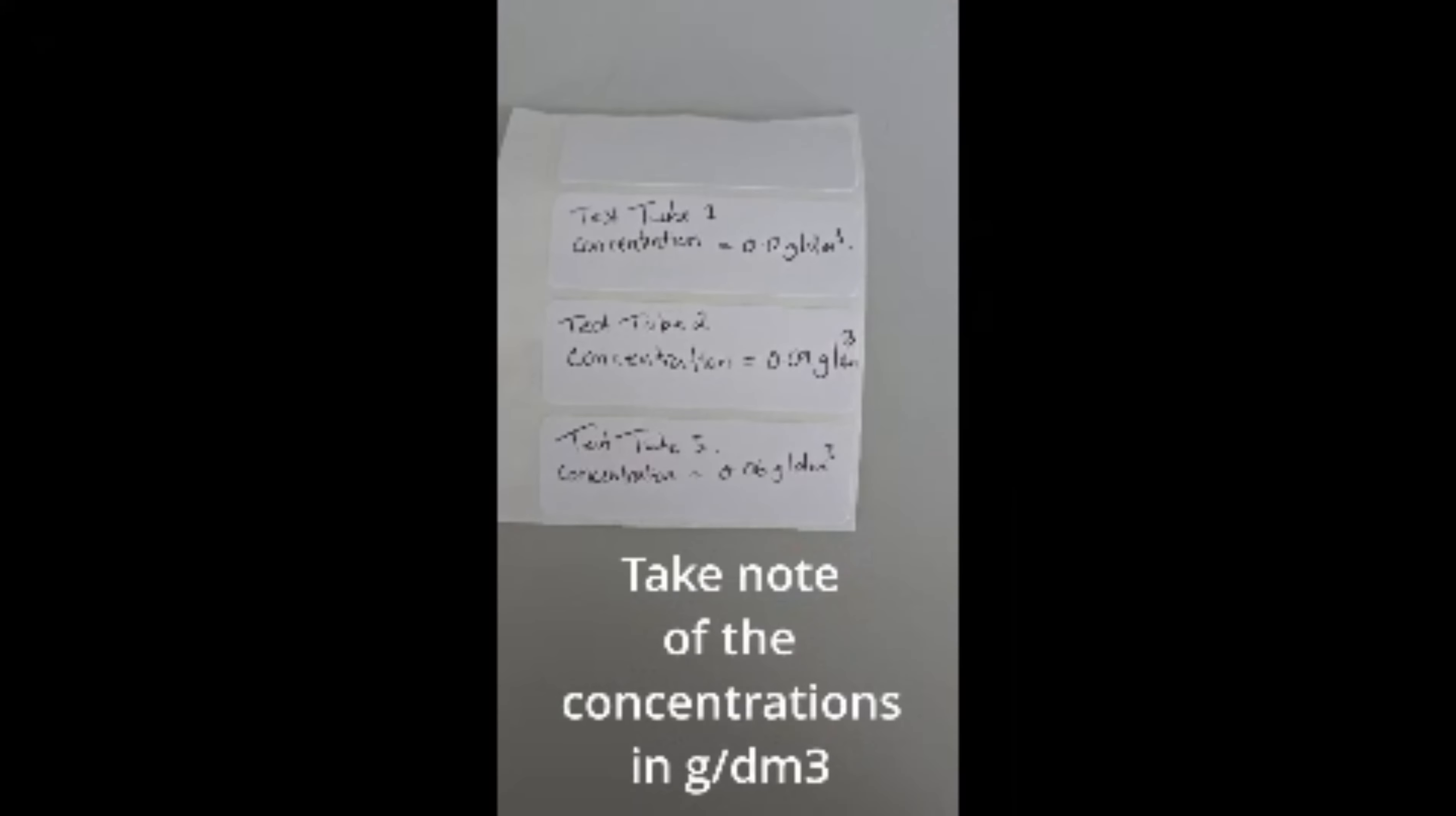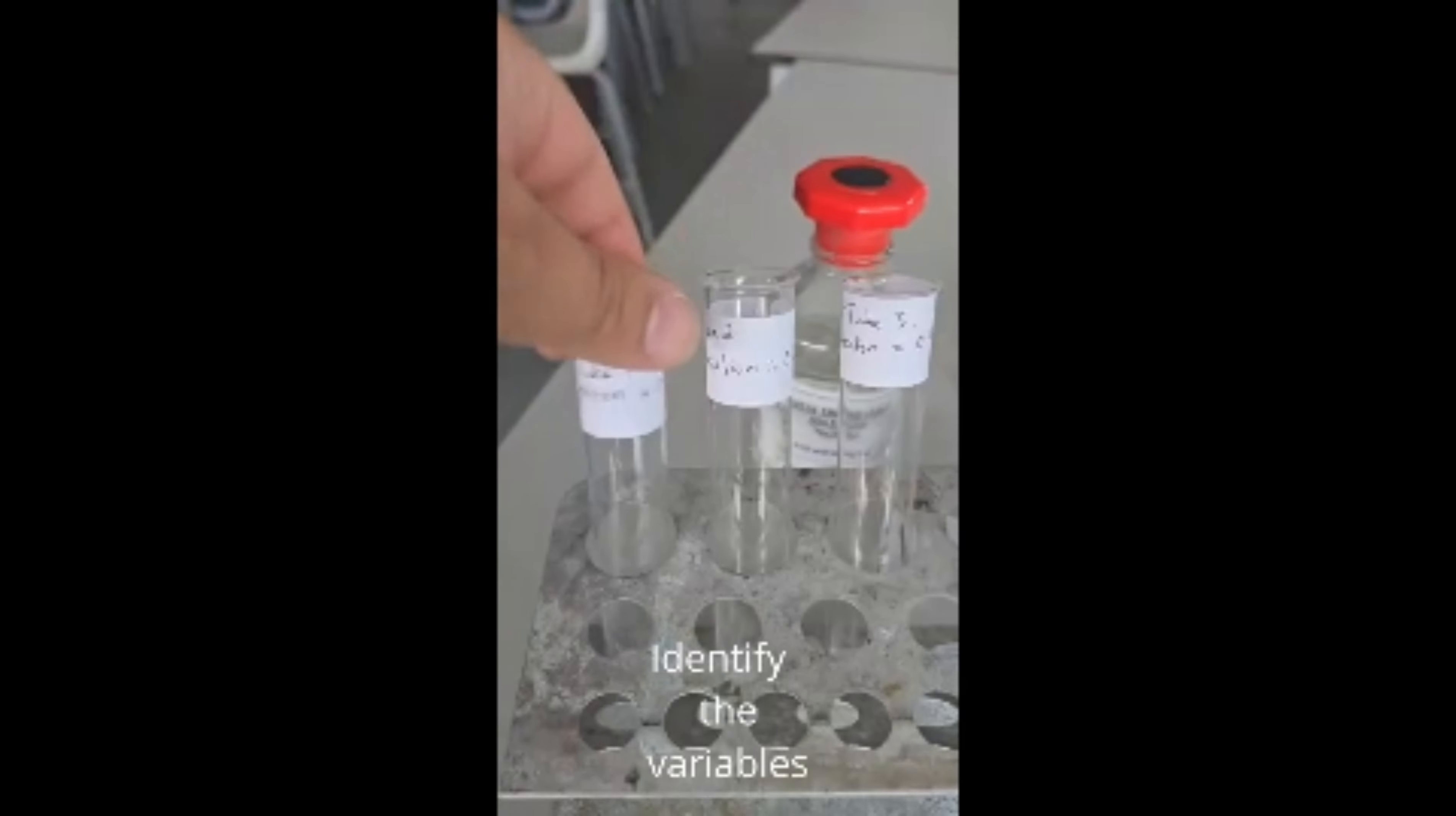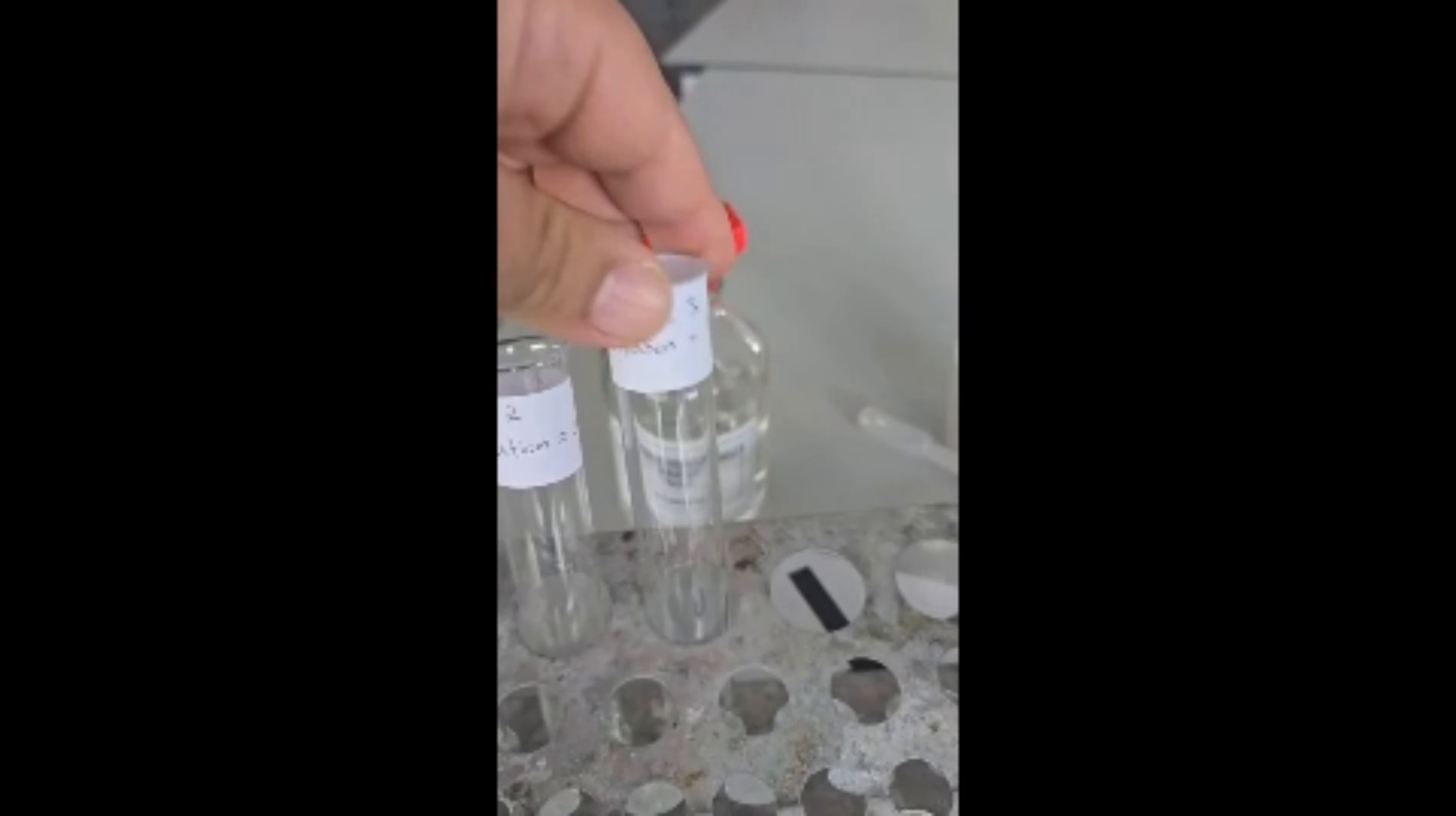Use the three labels to label three boiling tubes which will show the concentration of the sodium thiosulphate. Place the labels onto the boiling tubes.